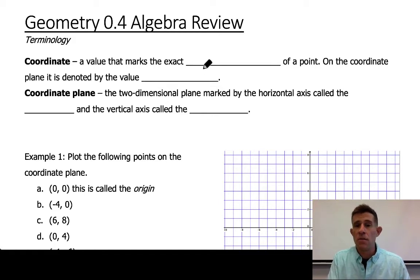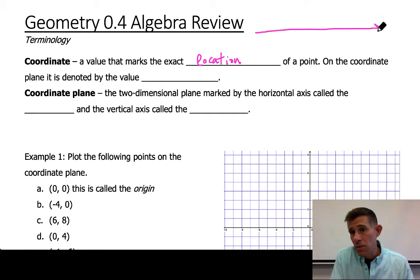So first of all, a coordinate is a value that marks an exact location of a point. Now that can be in a one-dimensional number line. For example, you guys learned a long time ago the number line here. We'll just start off at zero in the middle and then moving to the right 1, 2, 3. Well there's infinitely many points in between each one of these integer values.